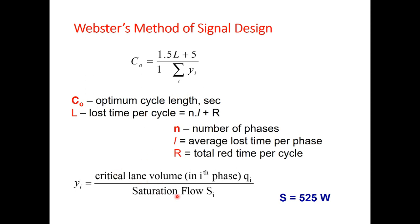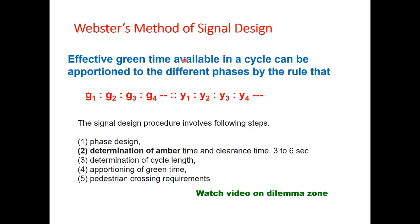The critical lane volume divided by saturation flow gives Yᵢ. I will explain the meaning of critical lane volume when we go through the example. The saturation flow as per the British method is given by: S = 525 × W, where W is the width at the stop line. Once you know the cycle length, effective green time available in the cycle can be apportioned to different phases in the ratio Y₁ : Y₂ : Y₃, where Yᵢ = qᵢ / Sᵢ for the critical lane.